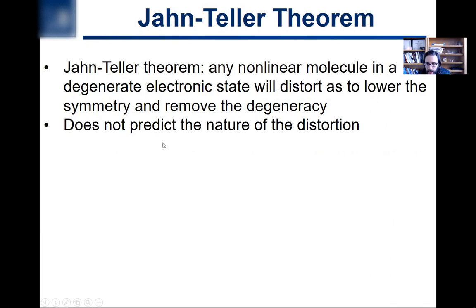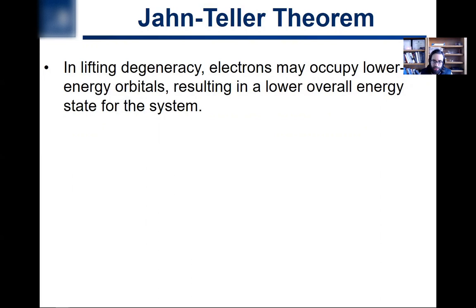The theorem doesn't tell you what type of distortion will happen. It's a geometric distortion, but oftentimes there are many different lower-symmetry geometries that you can go to, and this theorem makes no prediction about which one will occur. In lifting the degeneracy — that is, lowering the symmetry — electrons may occupy lower energy orbitals, resulting in a lower overall energy state for the system.